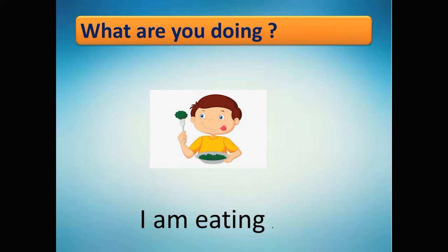We have a question and we have an answer. The question is 'What are you doing?' and the answer is: I am + verb + ing. For example, 'I am eating' or 'I am jumping.'